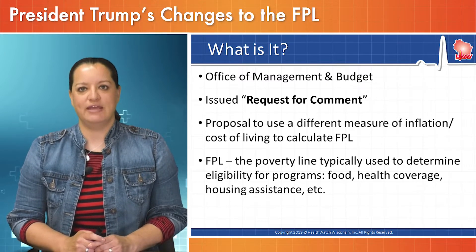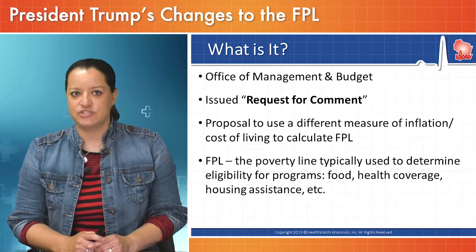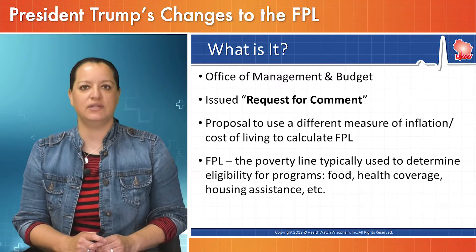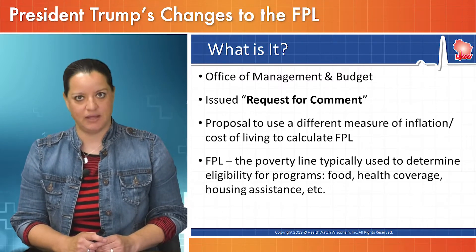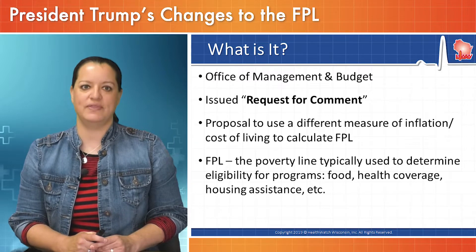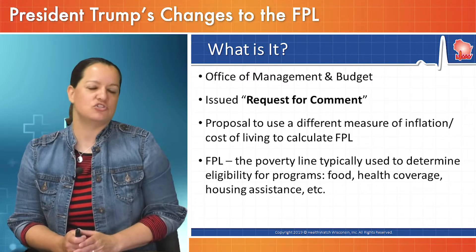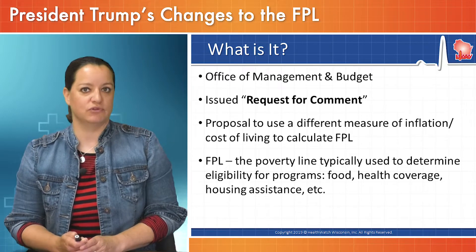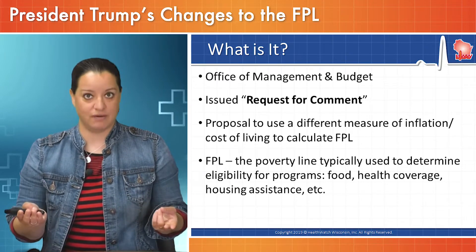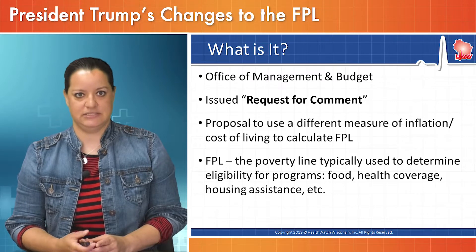It wants to evaluate if a different measure of inflation or cost of living should be used when calculating the FPL — the Federal Poverty Level. That's the line of poverty that determines eligibility for a lot of social programs like food support, health coverage like Medicaid, and housing assistance.